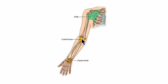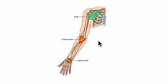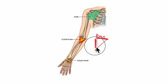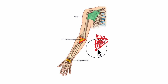To begin with, the cubital fossa is a triangular hollow situated on the front of the elbow. This triangular structure has a base, an apex, a lateral border, a medial boundary, and also a roof and a floor underneath it.